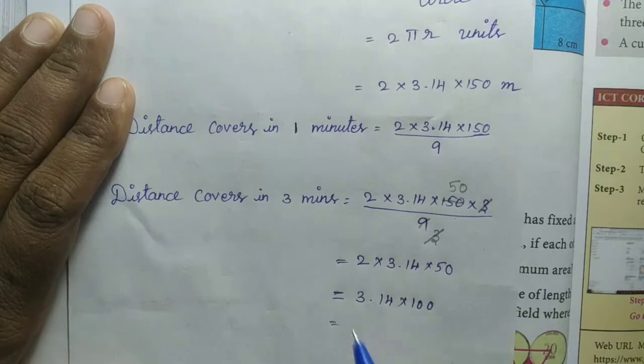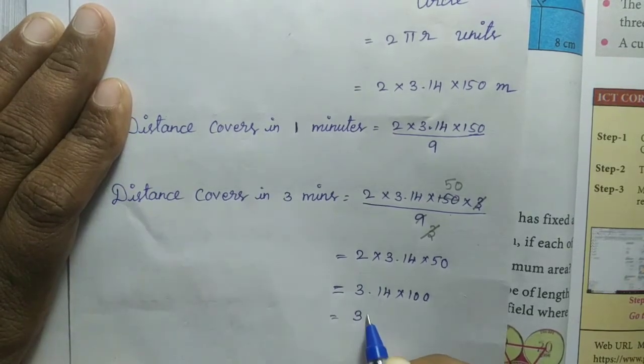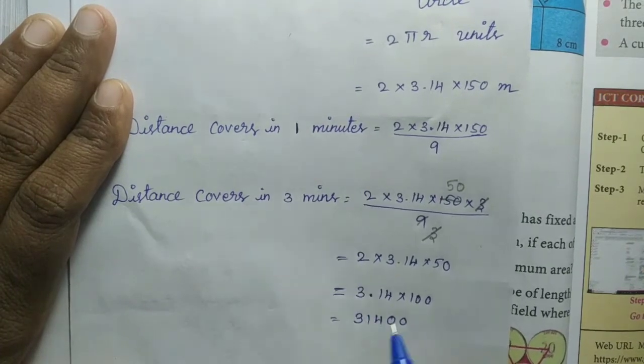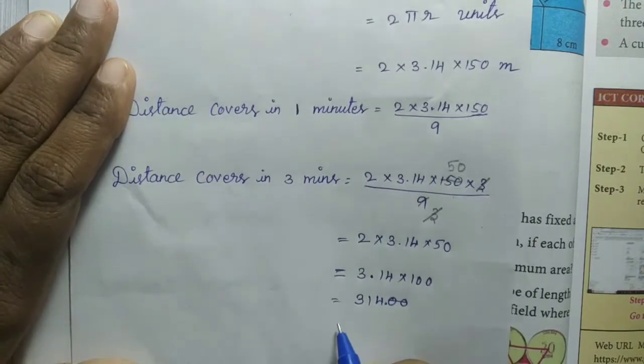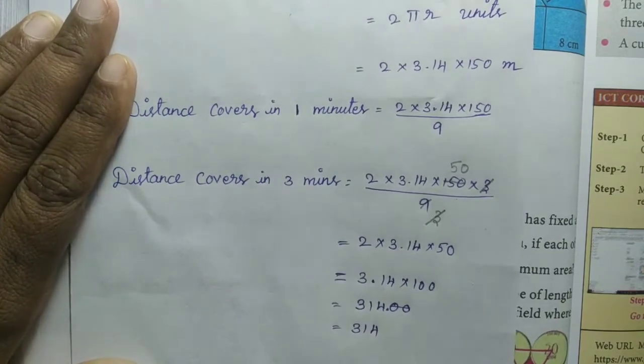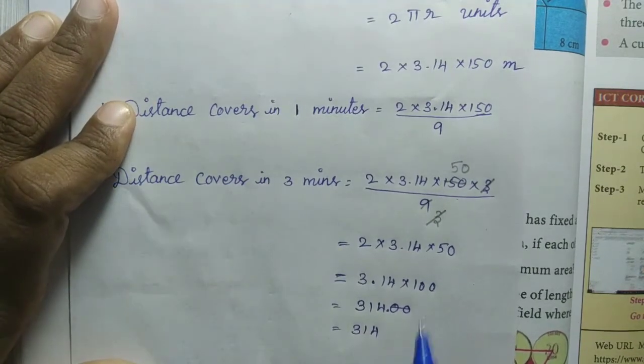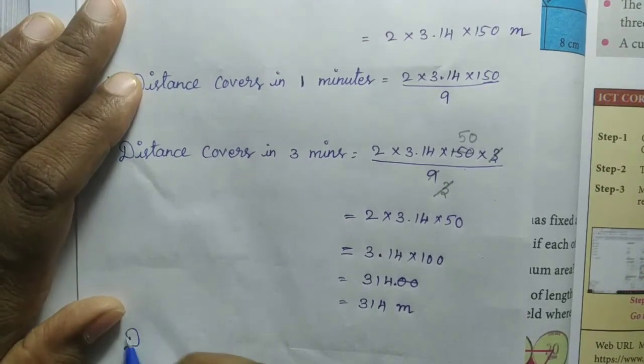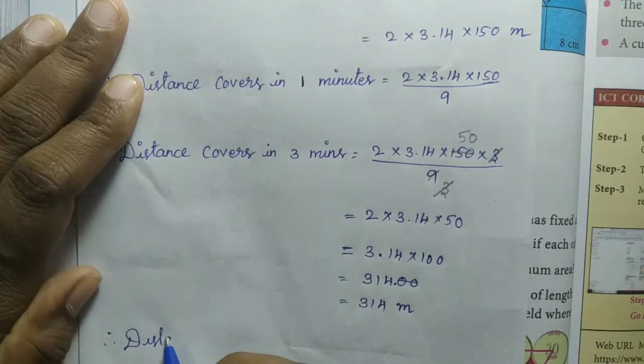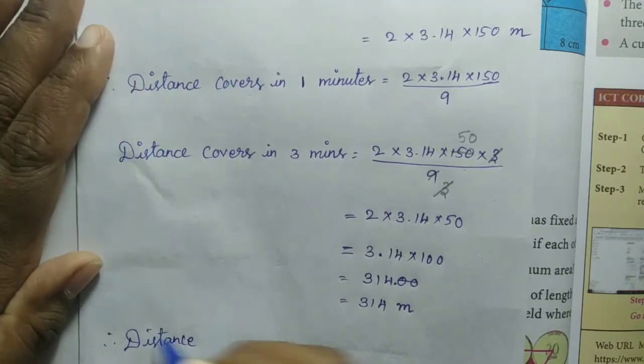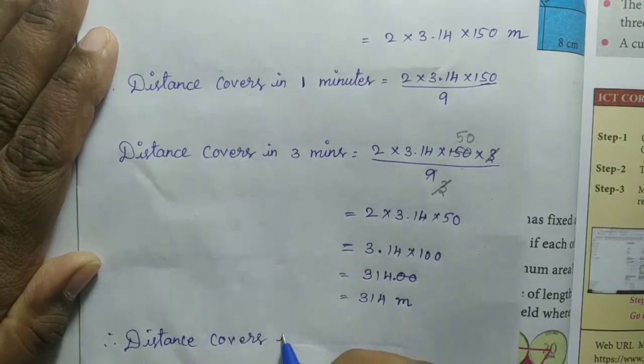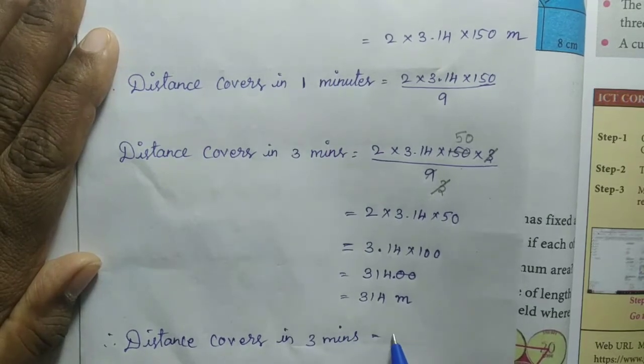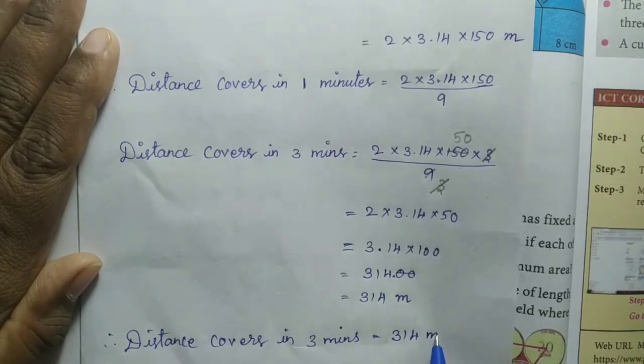After simplification, we get 2 × 3.14 × 50, which equals 314. The decimal places cancel out. Since the radius was given in meters, our answer is also in meters. The distance covered in 3 minutes on the circular track is 314 meters.